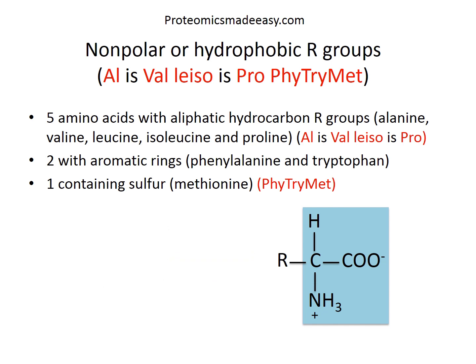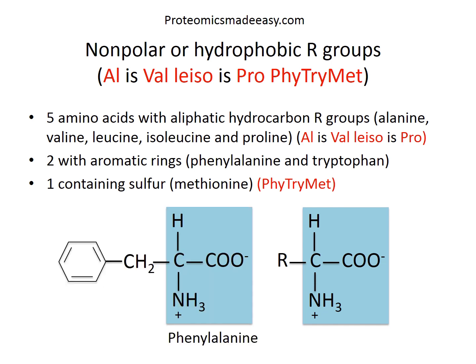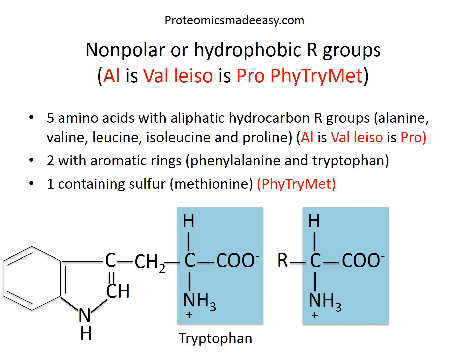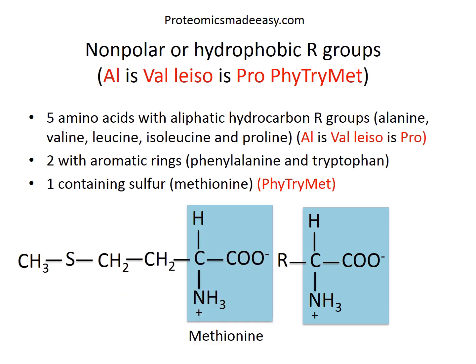Phenylalanine: since we know the structure of alanine, if the phenyl ring is attached to alanine, it becomes phenylalanine. Tryptophan requires some extra effort to remember its structure — it is one of 2-3 amino acids among the 20 that need additional memorization. Methionine contains sulfur, with the R group being CH2CH2SCH3. If you remember the phrase 'all is well, Lisa is pro, fitrimat' along with the characteristics of the R groups, it becomes easy to recall all these amino acids.